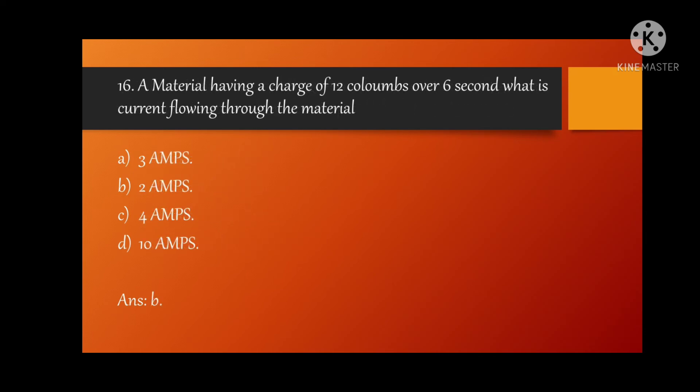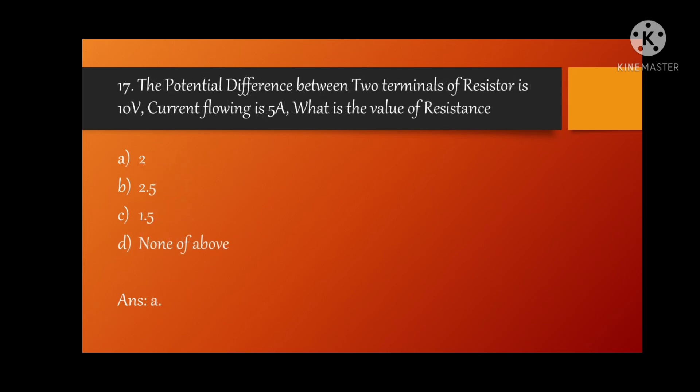MCQ 16: a material having a charge of 12 coulomb over 6 seconds, what is current flowing through the material? Option B is correct, 2 amperes.